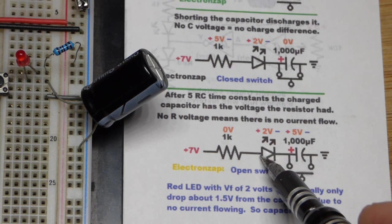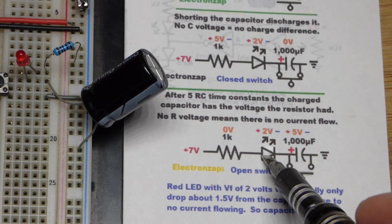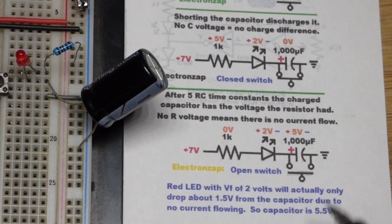it actually drops a certain amount of voltage. It changes slightly with how much current is going through it, but for the most part it drops a fairly reliable voltage right there.